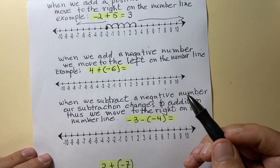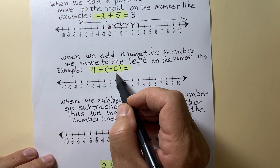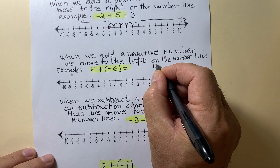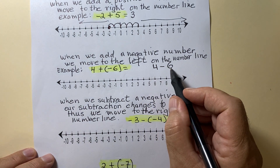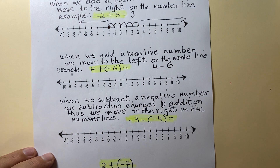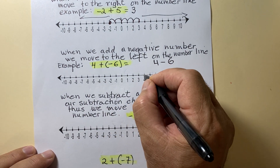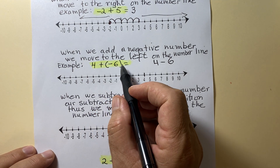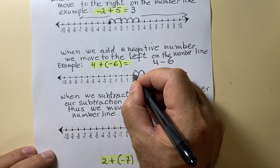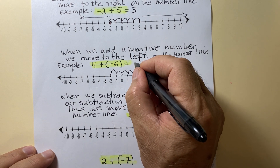When we add a negative number, we move to the left on the number line. So, 4 plus negative 6 — we move to the left. This can also be written as 4 minus 6. When you subtract a number, you move to the left. Start at 4 and move 6 units to the left: 1, 2, 3, 4, 5, 6. Stop and read — you get negative 2.